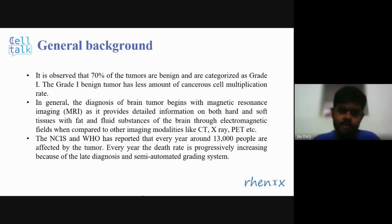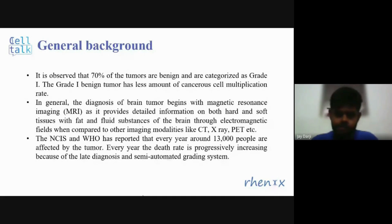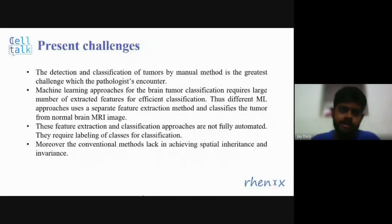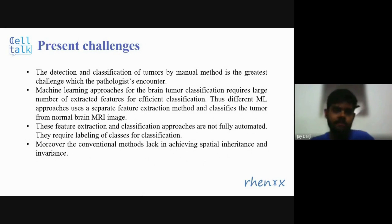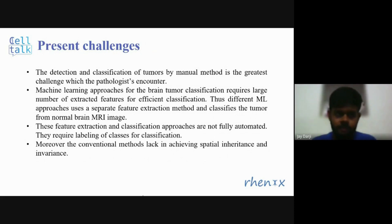The NCI and WHO have reported that every year around 13,000 people are affected by brain tumor, and the death rate is progressively increasing because of late diagnosis and semi-automated grading systems. Some present challenges that pathologists face include that detection and classification of tumors by manual methods is the greatest challenge right now. Machine learning approaches are also used to classify brain tumors, but those also require numerous features for efficient classification.